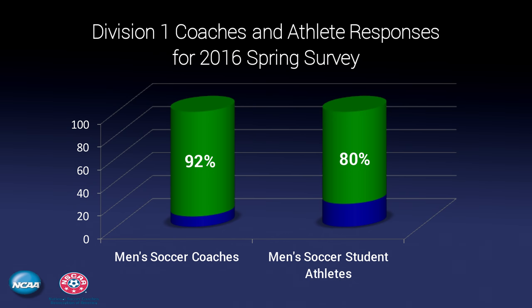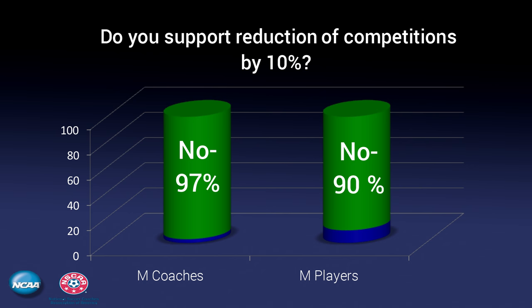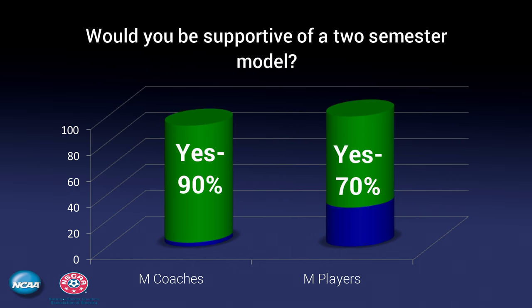Now, the results of those surveys — let's take a look at the questions. The very first question was: do you support the reduction of competition by 10%? The coaches said no by 97%, and the student-athletes said no by 90%. It's very clear — the student-athletes don't want to play fewer games. The next question: do you support having the same number of competitions and lengthening the season? Coaches, 92% said yes, we want a longer season. Student-athletes said 81%, yes, we want a longer season. And then finally, the question was posed: would you be supportive of a two-semester model? Here, the student-athletes — 70% of them say yes, we'd like to have more balance over two semesters. And the coaches, once again, 90% said yes, we would like this proposal to go through.